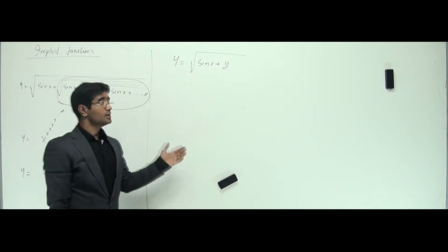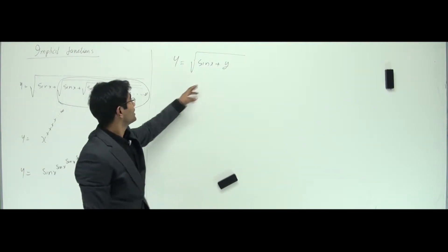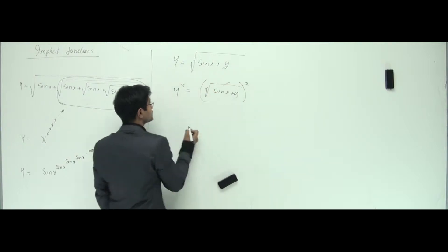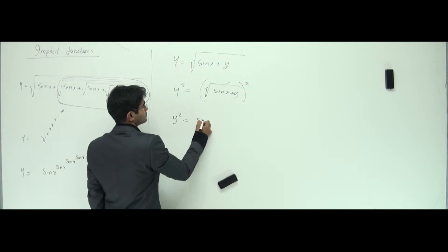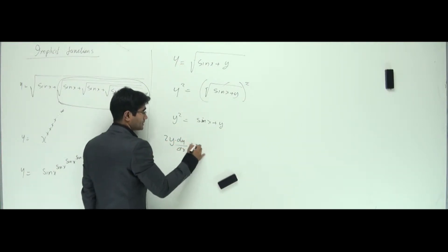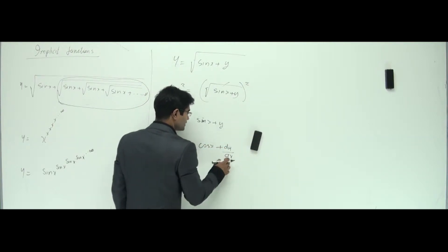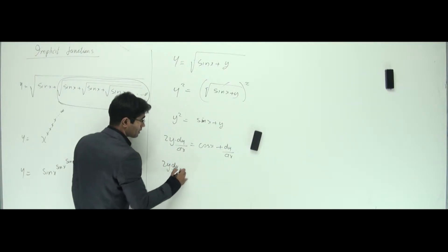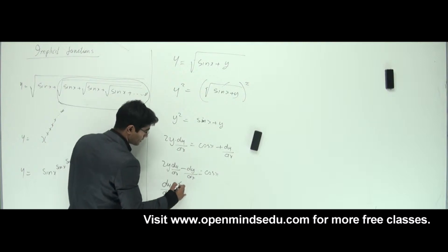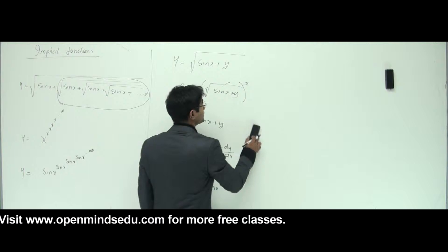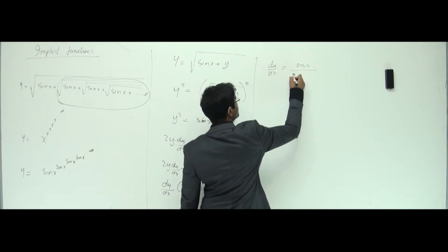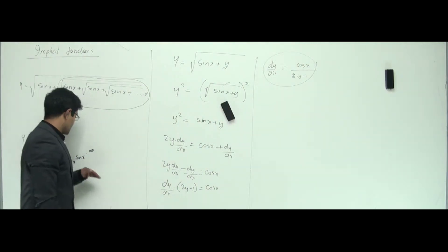Now I have a square root — can I remove it? Square both sides: Y² = sin x + Y. Now I can differentiate this easily. That gives 2Y · (dy/dx) = cos x + dy/dx. Taking the dy/dx terms to the left: 2Y · (dy/dx) − dy/dx = cos x. Factor out dy/dx: dy/dx · (2Y − 1) = cos x. Therefore, dy/dx = cos x / (2Y − 1). That's the answer.